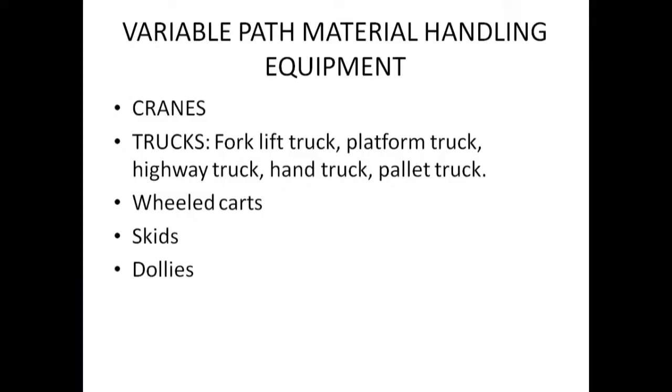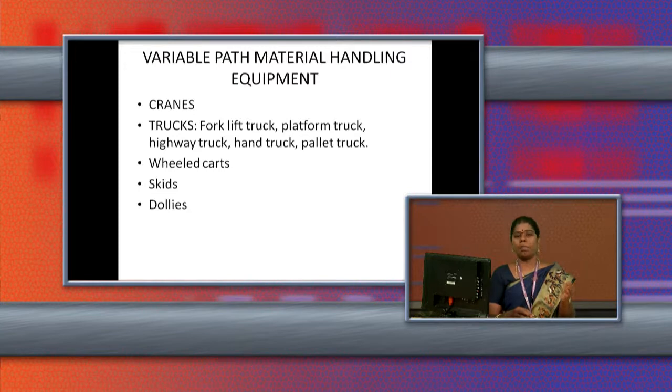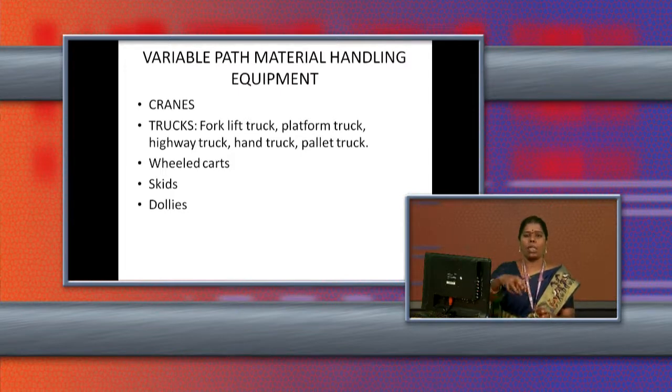First, let us see the variable path material handling equipment. The first one is the crane. The crane can be used in any place. For example, if a car falls down on the highway, cranes are used to lift it. Similarly, at a harbor, ships bring products from other countries and cranes are used to lift the material from the ship and place it in a lorry. Cranes can be taken anywhere — inside or outside the organization, on highways, or inside the harbor.